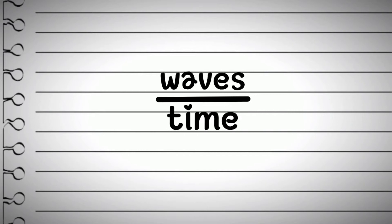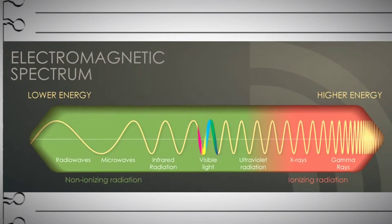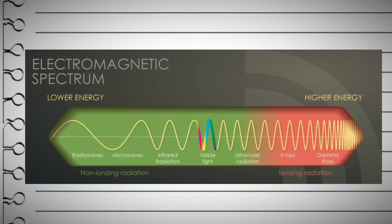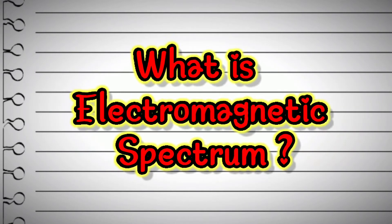The frequency of waves is the number of waves per unit time. A shorter wavelength means a higher frequency, so short wavelength is responsible for maximum energy transmission in a short period of time, because energy is directly proportional to frequency. Now we can start our main topic of this video.